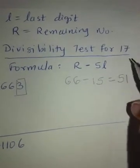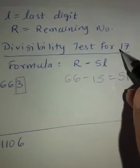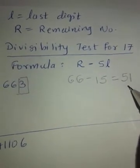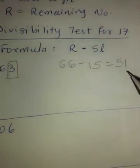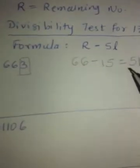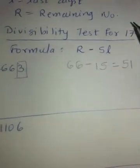Is 51 divisible by 17? 17 times 3 is 51. That means number 663 is divisible by 17.